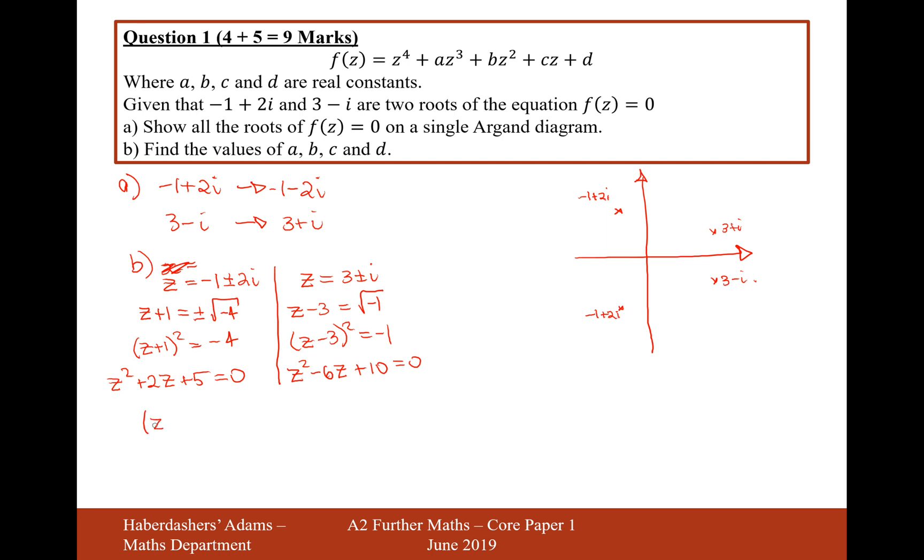Now let's combine these two quadratics: (z²+2z+5)(z²-6z+10)=0. Expanding this: z⁴. For the z³ term, it's 2z³-6z³, which is -4z³. For the z² term, we have -12z² from 2z and -6z, plus 10z² from 10 times z², plus 5z², so 15-12 gives +3z². For the z term, it's -30+20, which is -10z. And then +50=0.